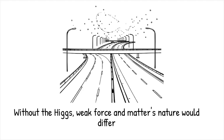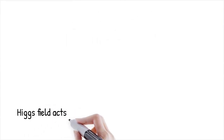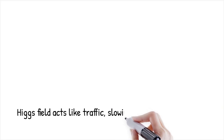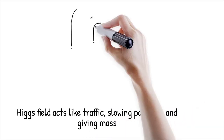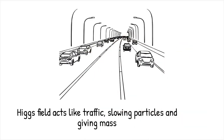Think of mass like a traffic jam effect. If you drive your car on a completely empty highway, you can move very fast. But if the highway is filled with slow-moving traffic — the Higgs field — your car effectively behaves as though it's heavier and slower. Particles in traffic with the Higgs field end up slower and thus have mass.